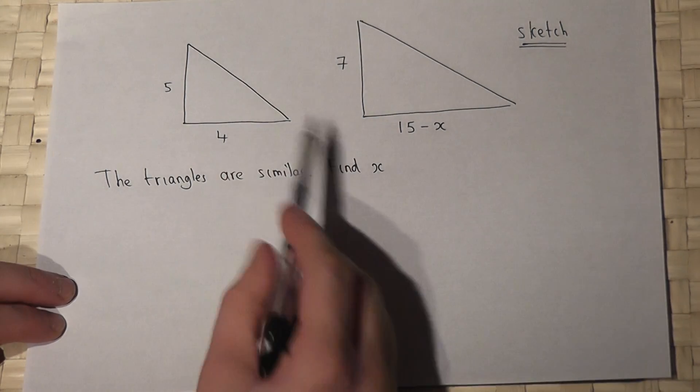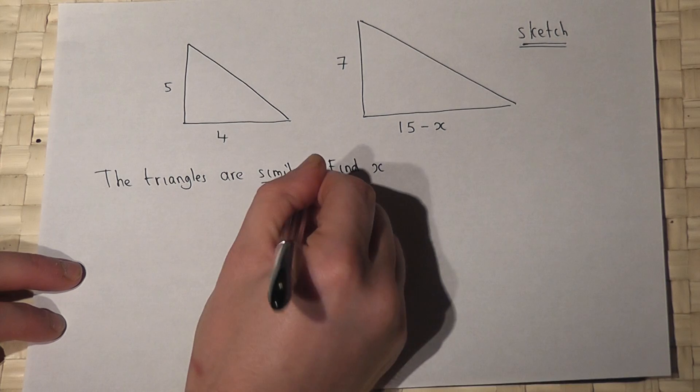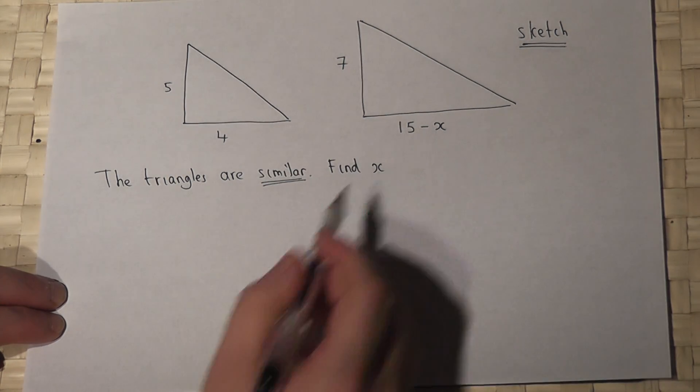In this question we're given two similar triangles and we're asked to find x.